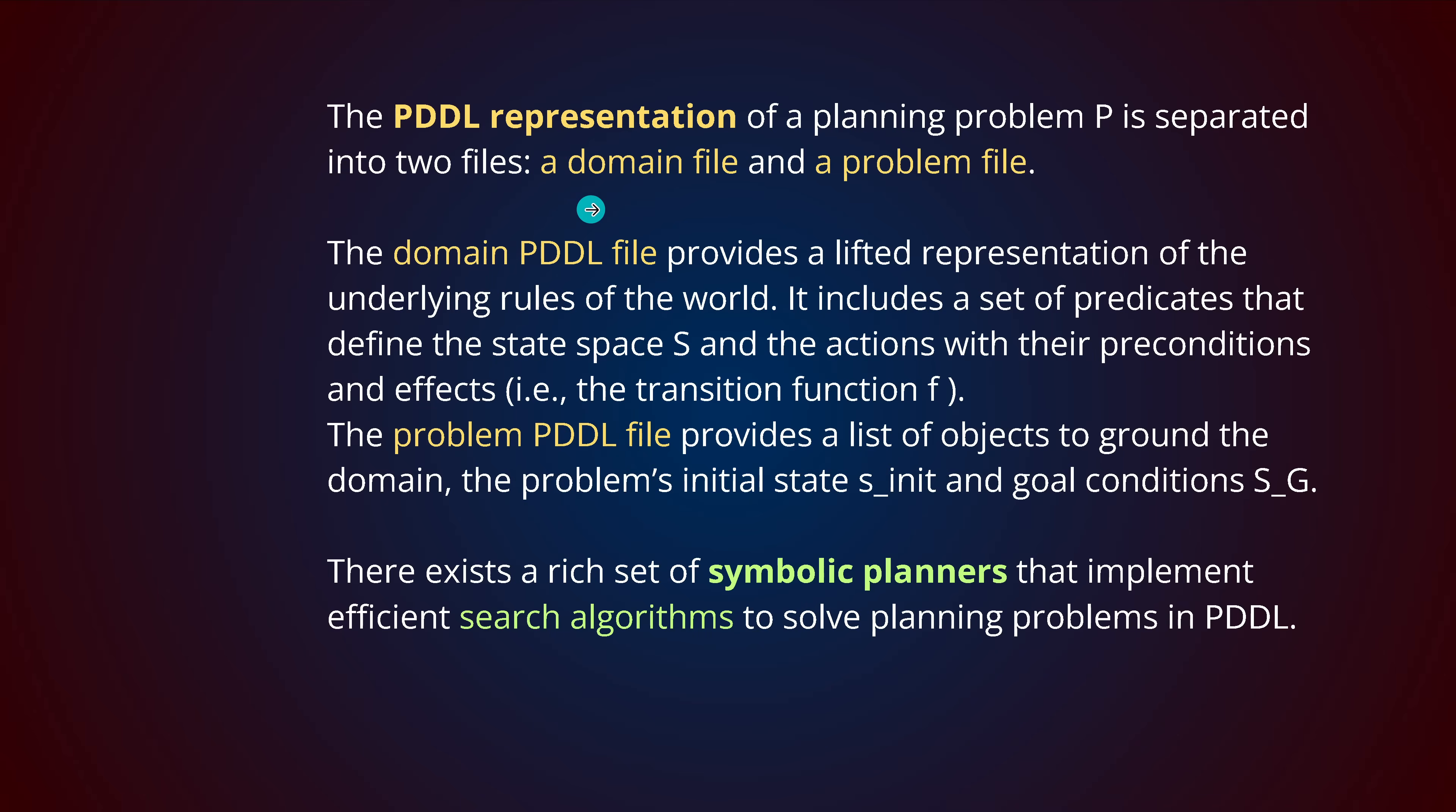The main domain PDDL file provides the lifted representation of the underlying rules of the world. A set of predicates that define the state space and the action space with their preconditions and their effect. This means the transition function is defined. The problem file provides a list of objects, the domain and problem's initial state and the goal. Then we had our symbolic planner with beautiful solvers out there - deterministic solvers, absolute logic solvers with efficient search algorithms. This is not next token prediction. This is a deterministic system.